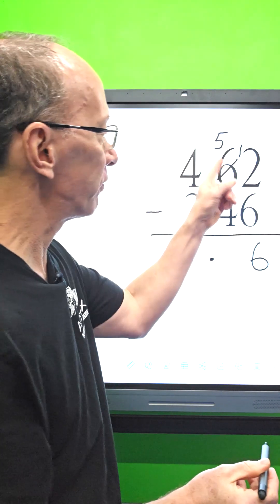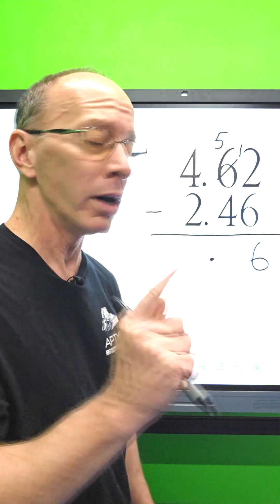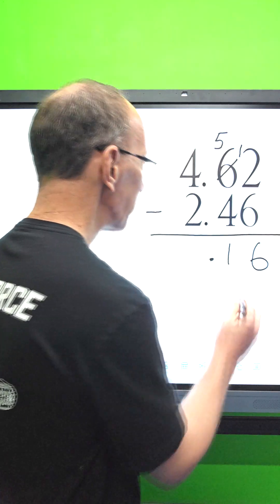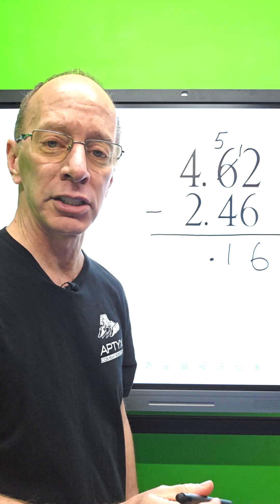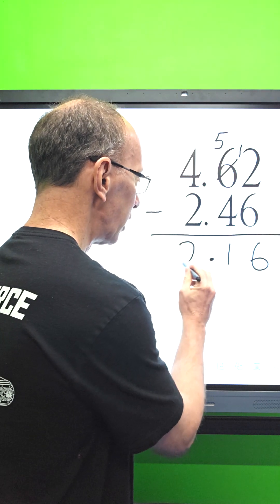Now I take five minus four. Five minus four, uno, one. So I put the one right here. Now I'm going to go ahead and subtract four minus two. Two, two, dos. I put two right here. Our answer is 2.16. That was so much fun!